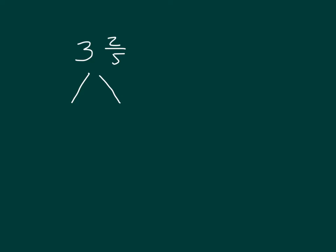How many ones is it worth? Right, there are three ones within 3 and 2 fifths. How many fifths go along with those 3 ones? Correct, 2 fifths.